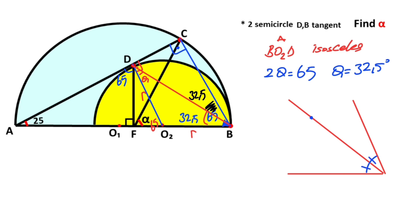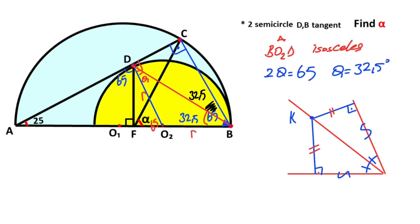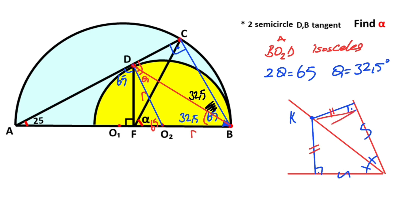Let me remind you: if we have an angle bisector line, these two angles are equal to each other. If we call point K and draw a perpendicular from point K, this side and this side must be equal, and these two perpendiculars must be equal to each other — meaning these two triangles are congruent.